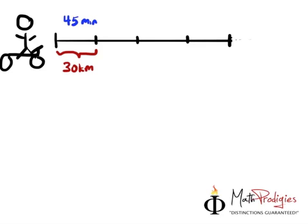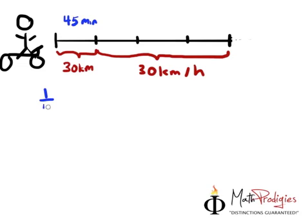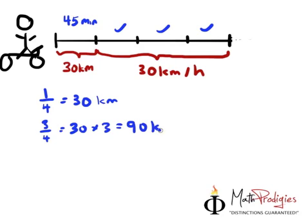And it says that he travels the remaining at 30 kilometers per hour. So, I'm going to write this down as 30 kilometers per hour, over here. Not 30 kilometers, but 30 kilometers per hour. Okay, the question is, find the time taken for the whole journey. So, now we understand that one-quarter of the journey is equal to 30 kilometers. So one unit is 30 kilometers.